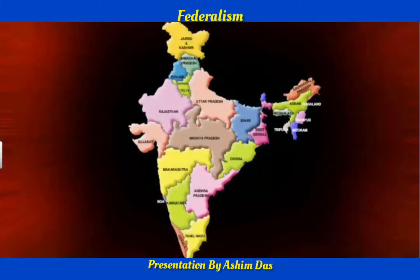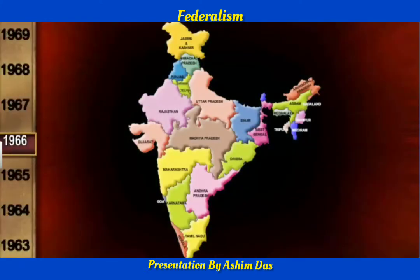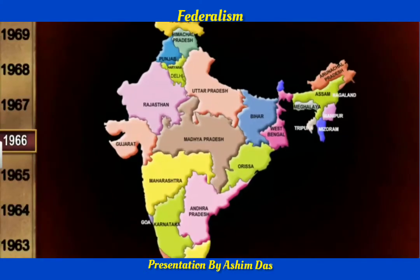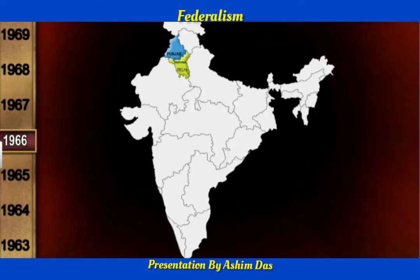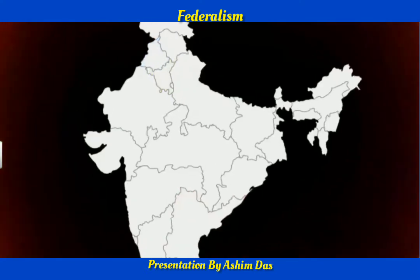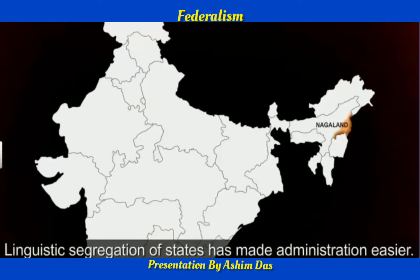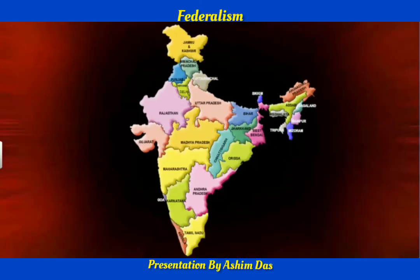In 1966, Haryana was created from the state of Punjab. Similarly, the 16 northern Telugu-speaking districts of Madras state became the new state of Andhra. Some states like Nagaland, Uttarakhand, and Jharkhand were created to recognize their cultural and ethnic differences. The formation of linguistic states has made the country more united and easier to administer.